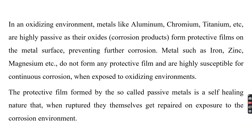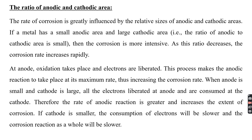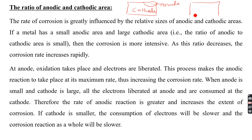The third factor that decides the rate of corrosion is the ratio of anodic to cathodic area. The rate of corrosion is greatly influenced by the relative sizes of the anodic and cathodic areas. Consider two metals: in one, a small area is the anode and a large area is the cathode; in the other, a small area is the cathode and a large area is the anode. Among these two, one will undergo fast corrosion.